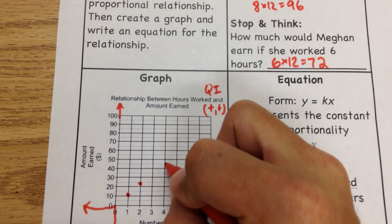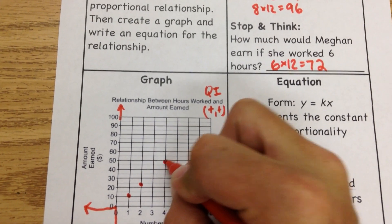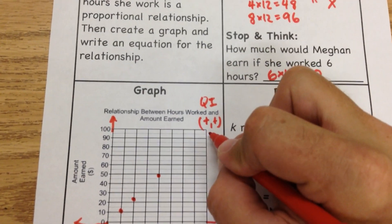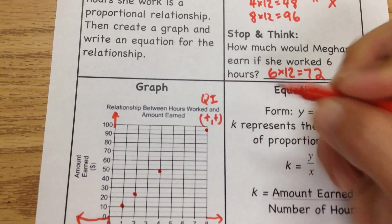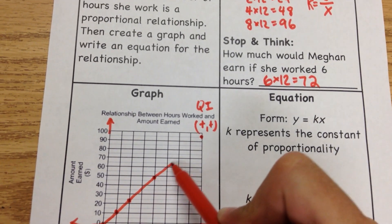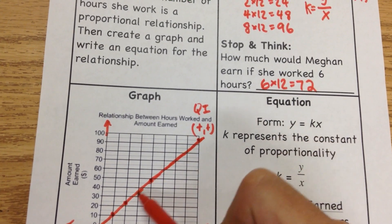And then the last one we have, eight hours of work, way up here, $96, which is just above $95. And as you see, if I drew a line, it would make a straight line.